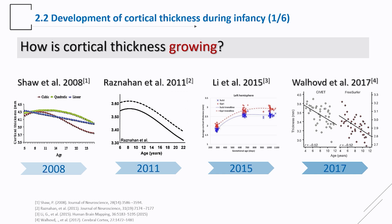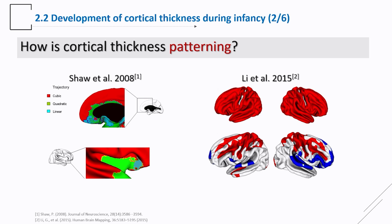In the first work, we focused on cortical thickness, with two aspects: trajectory and spatial patterning. Regarding trajectory, researchers long noticed a peak must exist somewhere during brain development — first thought to be in the teenage years, then around eight years of age. We found this peak is very likely between one and two years of age, during infancy, and evidence showed that after three years of age no peak was observed. For spatial patterning, researchers tried to delineate patterns by growth type — cubic, quadratic, or linear — yielding two or three patterns, but no more detailed patterns.